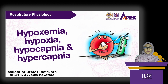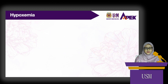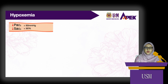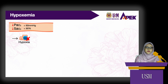Hypoxemia is the reduction in the arterial pressure of oxygen to less than 60 mmHg, or reduction of oxygen saturation in the arterial blood to less than 90%. Hypoxemia may cause hypoxia, which is a decrease in oxygen delivery to the tissues or decrease in oxygen utilization by the tissues.